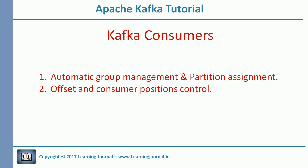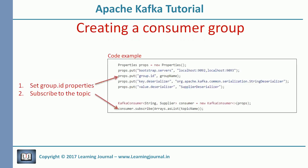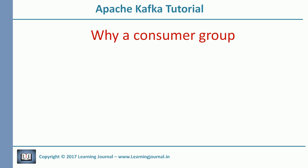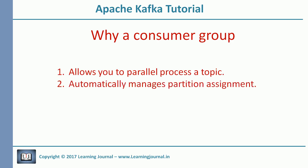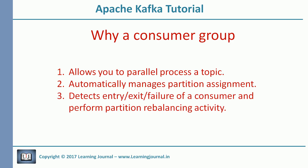In our earlier sessions, we learned about two things that are managed by Kafka: automatic group management and partition assignment, and offset and consumer positions control. To become a member of a group, you just need to provide a group name and subscribe to the topics, and Kafka will make you a member of a consumer group. This gives you the following advantages: allows you to parallel process a topic, automatically manages partition assignment, detects entry, exit, and failure of consumers, and performs partition rebalance activity. Most of the time, you want all of these features.